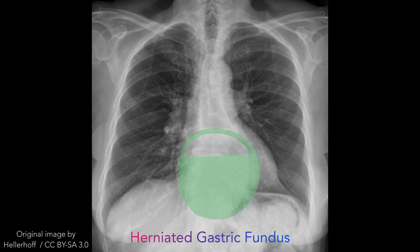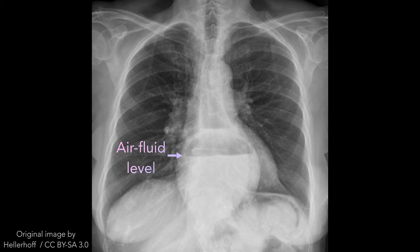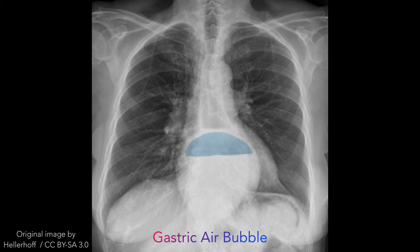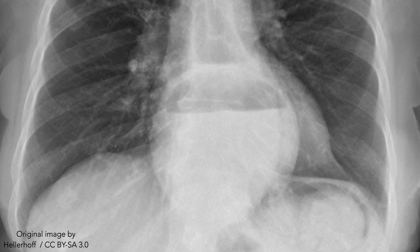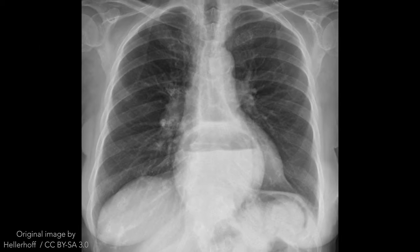Hiatal hernia usually presents radiographically as a well-defined, rounded, retrocardiac opacity with an air-fluid level. In many cases, there will not be an air bubble below the left hemidiaphragm, which is expected since the stomach is no longer in its usual position. One pitfall is that hiatal hernias can look similar to a retrocardiac lung abscess or another cavitary lesion, but the hernia will change in size and shape between radiographs.